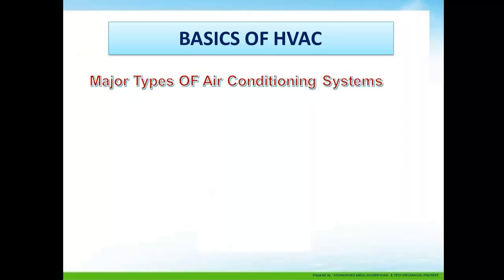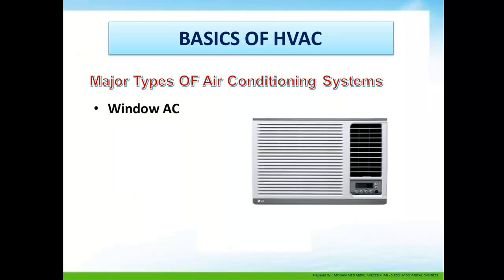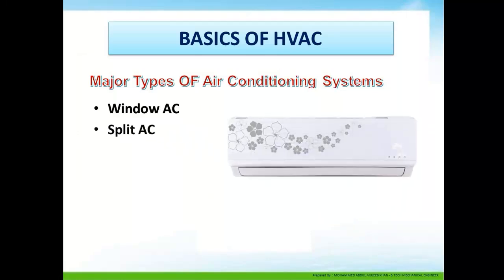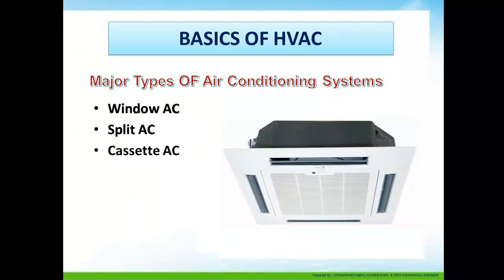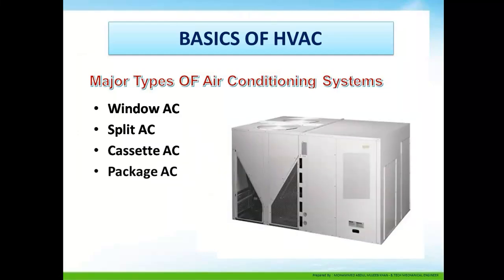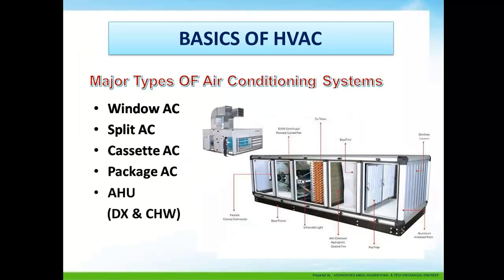Major types of air conditioning systems: window AC, split AC, cassette AC, package AC, AHU (air handling unit) — which can be either a DX or chilled water system.